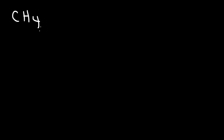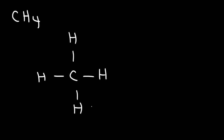So let's say if we want to draw the Lewis structure for methane. You know that carbon likes to form four bonds and hydrogen can only form one bond, so the only way to put this together is to draw carbon with four hydrogen atoms around it. And so that is the Lewis structure of methane.